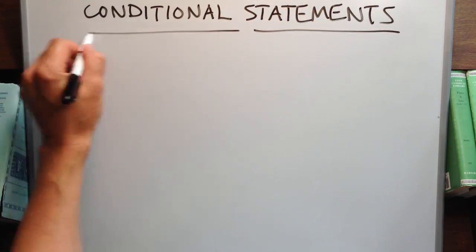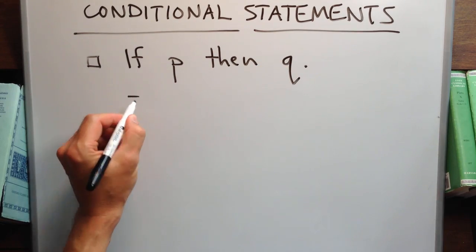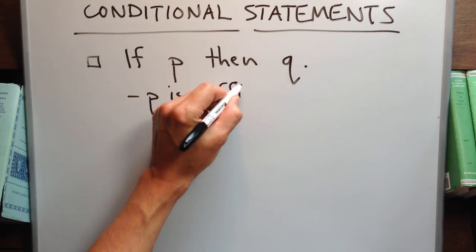The standard form is if P, then Q. This indicates that P is a sufficient condition for Q, while Q is a necessary condition for P.